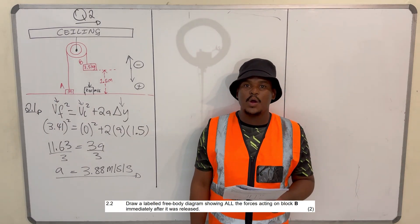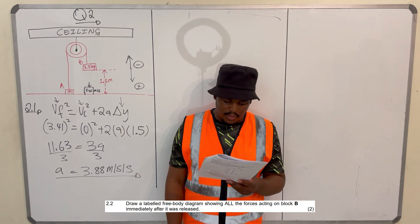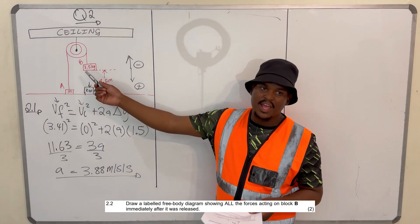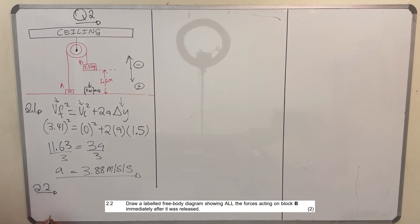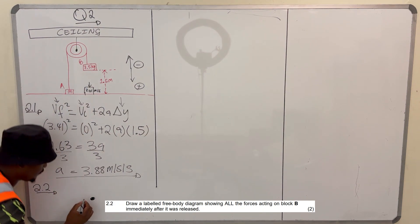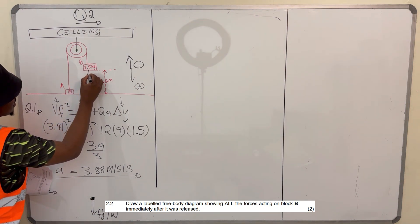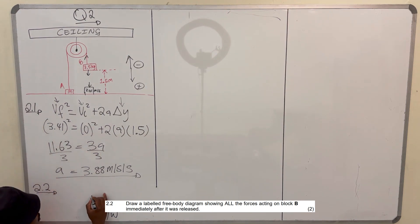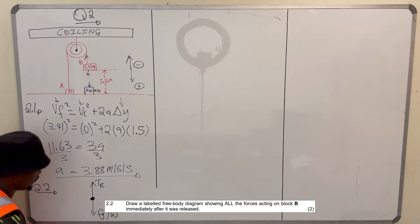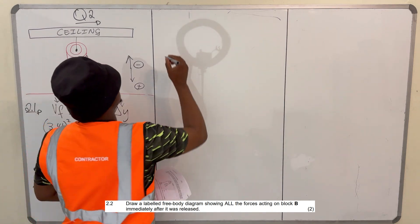Question 2.2: Draw a labelled free body diagram showing all the forces acting on block B immediately after it was released. Here is block B. The forces acting on it are: the weight, which is the force of gravity (FG) acting downward, and the tension in the rope pulling it upwards. These are the two forces operating on the object as it was released.